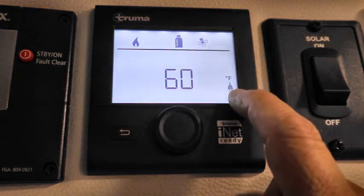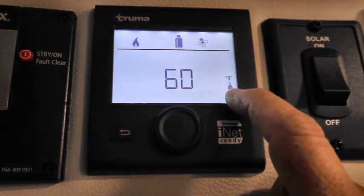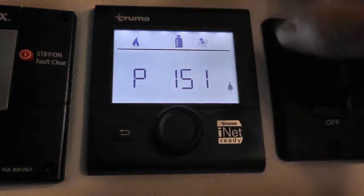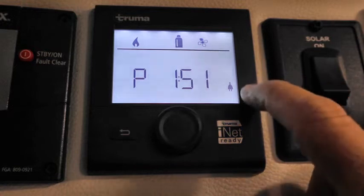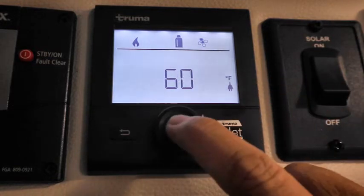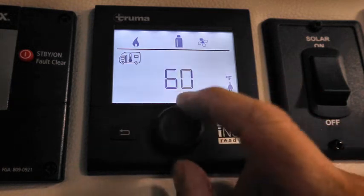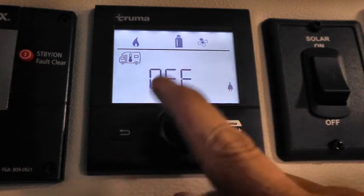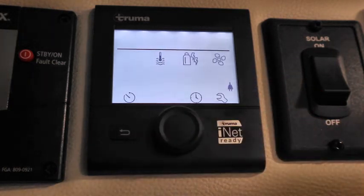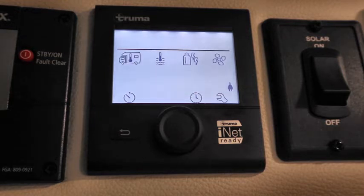And since we're plugged into a 30 amp outlet, I also have that little icon right over here on the right side showing it's plugged in. So we're going to turn off the furnace. We don't really need the furnace. Push that again. And I rotate it to off and select it again. So now that's turned off. So the furnace is off.